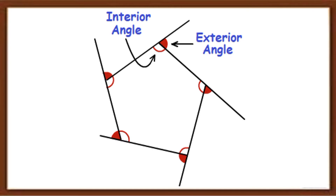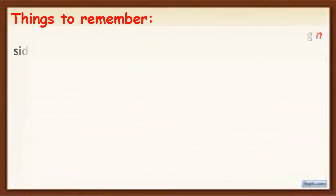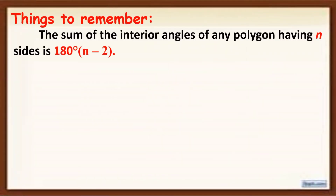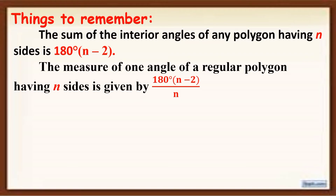These are the things to remember. The sum of the interior angles of any polygon having n sides is 180 degrees times (n minus 2). The measure of an angle of a regular polygon having n sides is given by 180 degrees times (n minus 2) all over n.